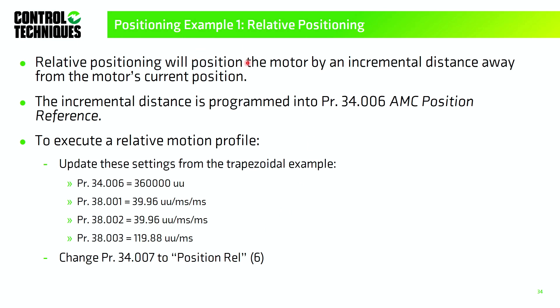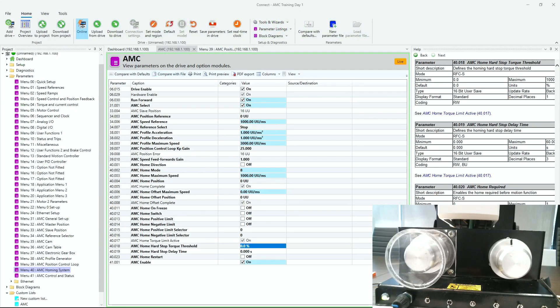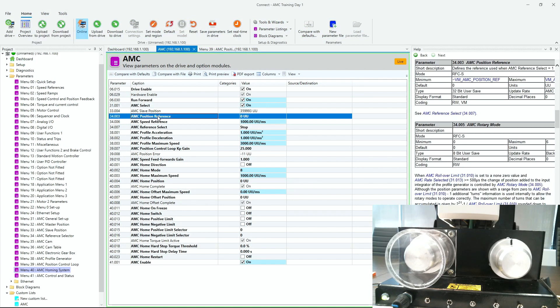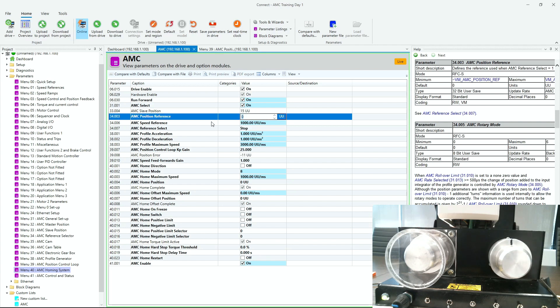To execute a relative motion profile, set menu 38-03 (speed) to 119.88 UU/ms, and menu 38-01 and 38-02 (accel/decel) to 39.96 UU/ms². The position reference in menu 34 is set to 360,000 user units (one motor revolution). Then change menu 34-07 from stop to position relative to execute the profile.